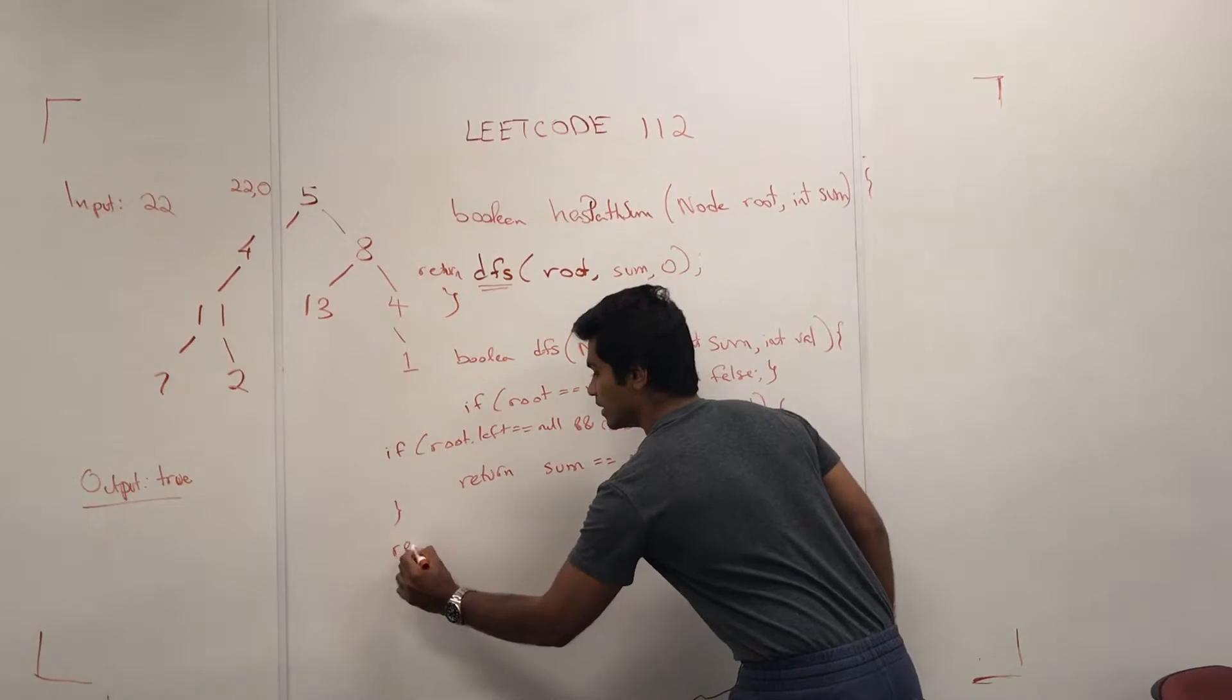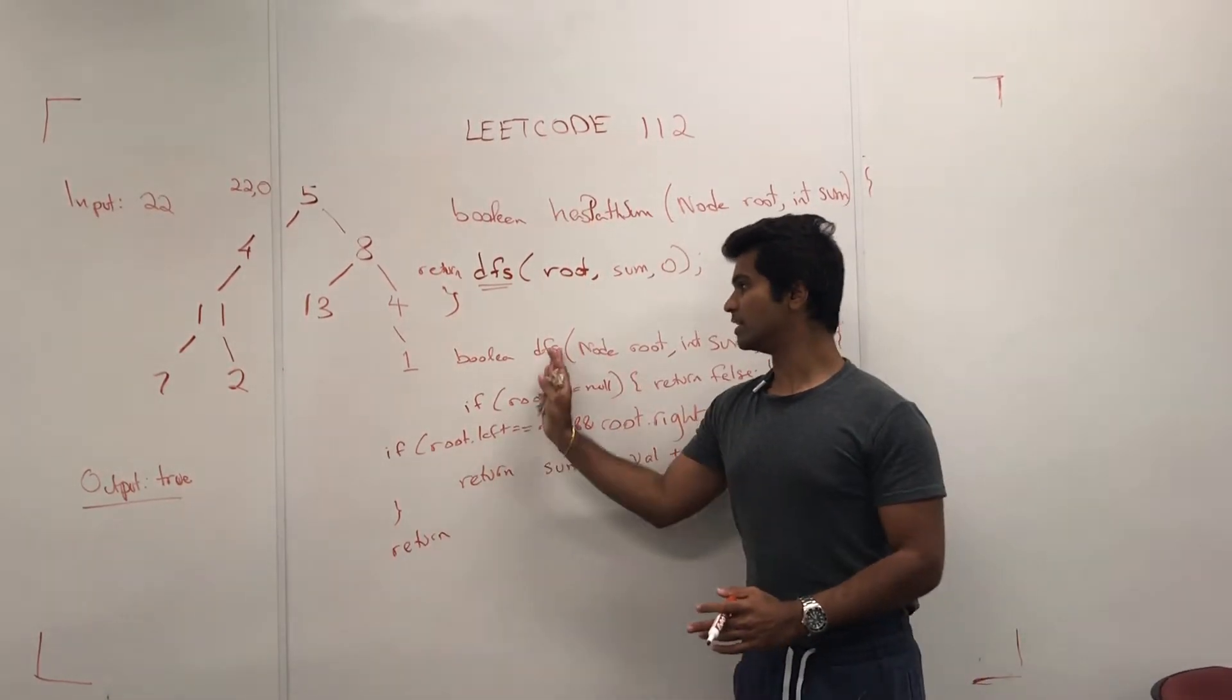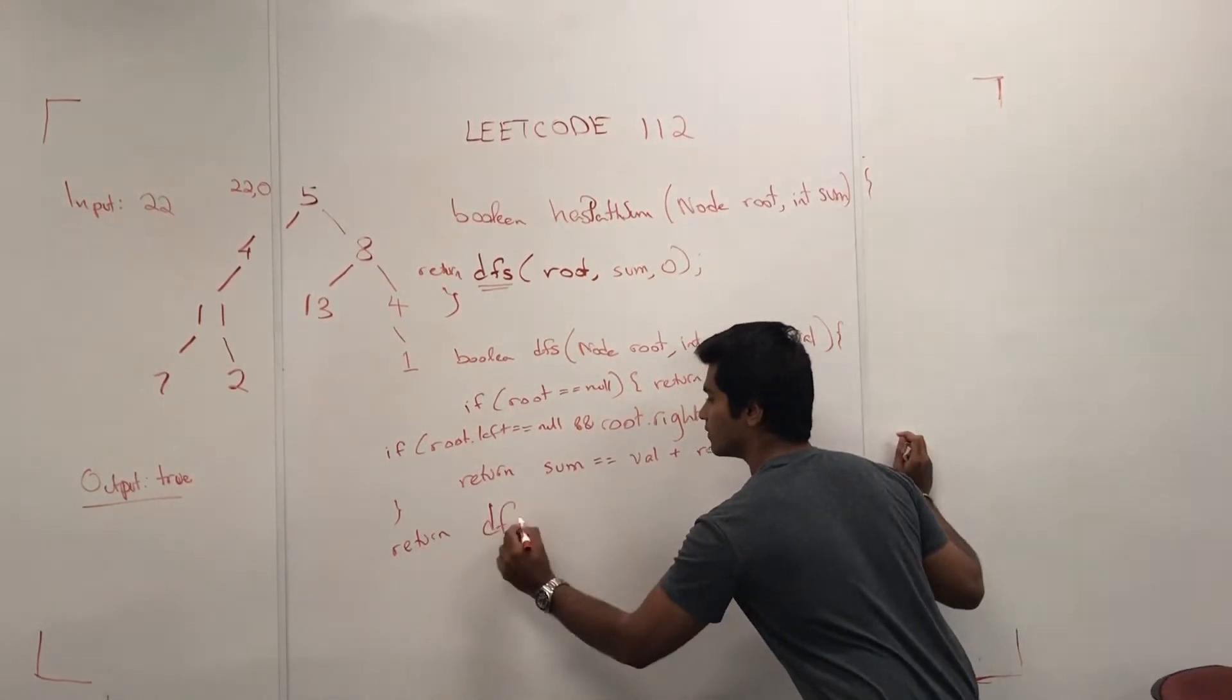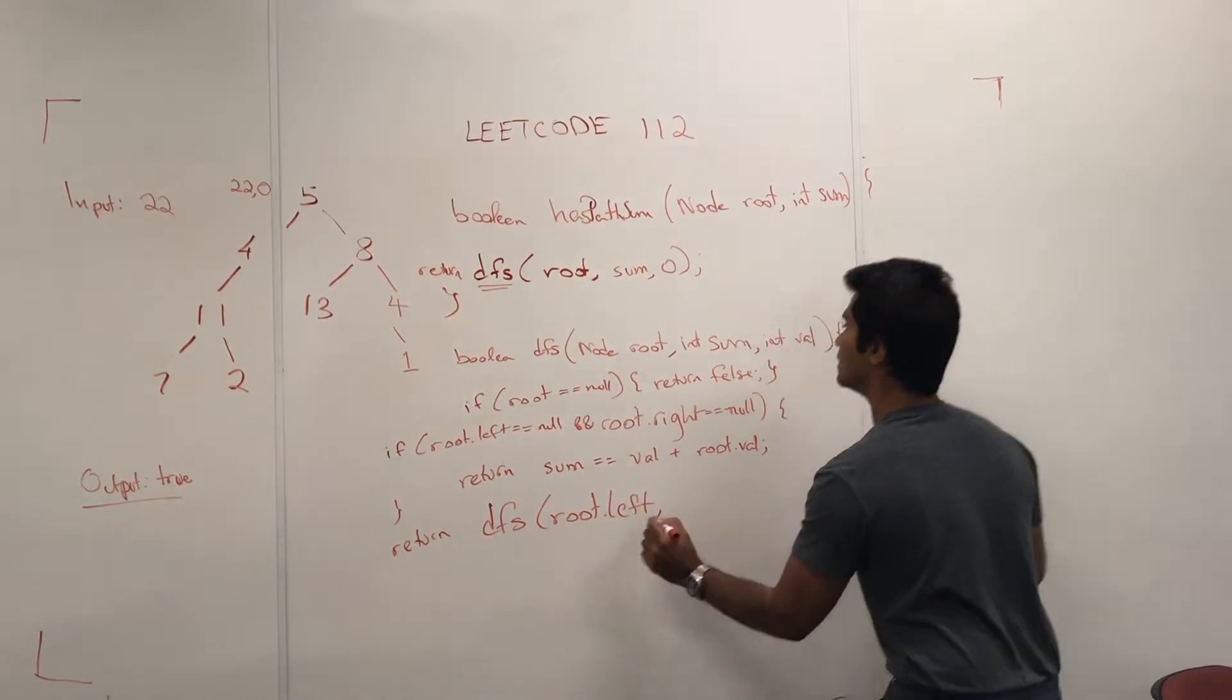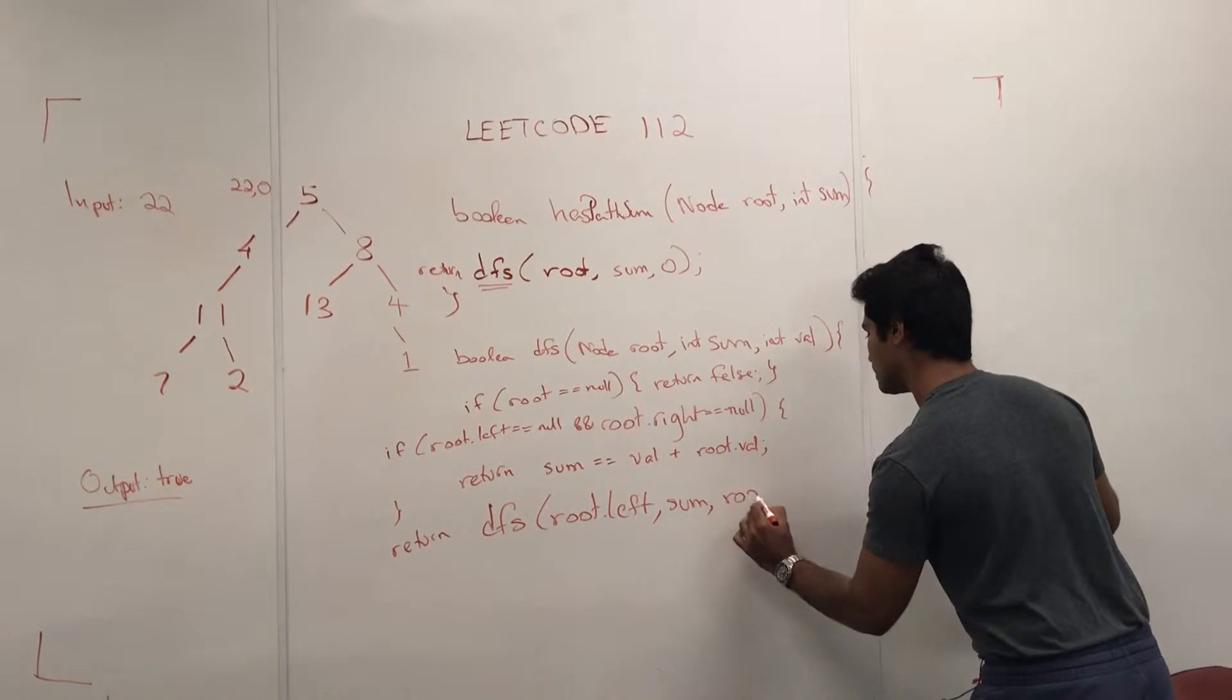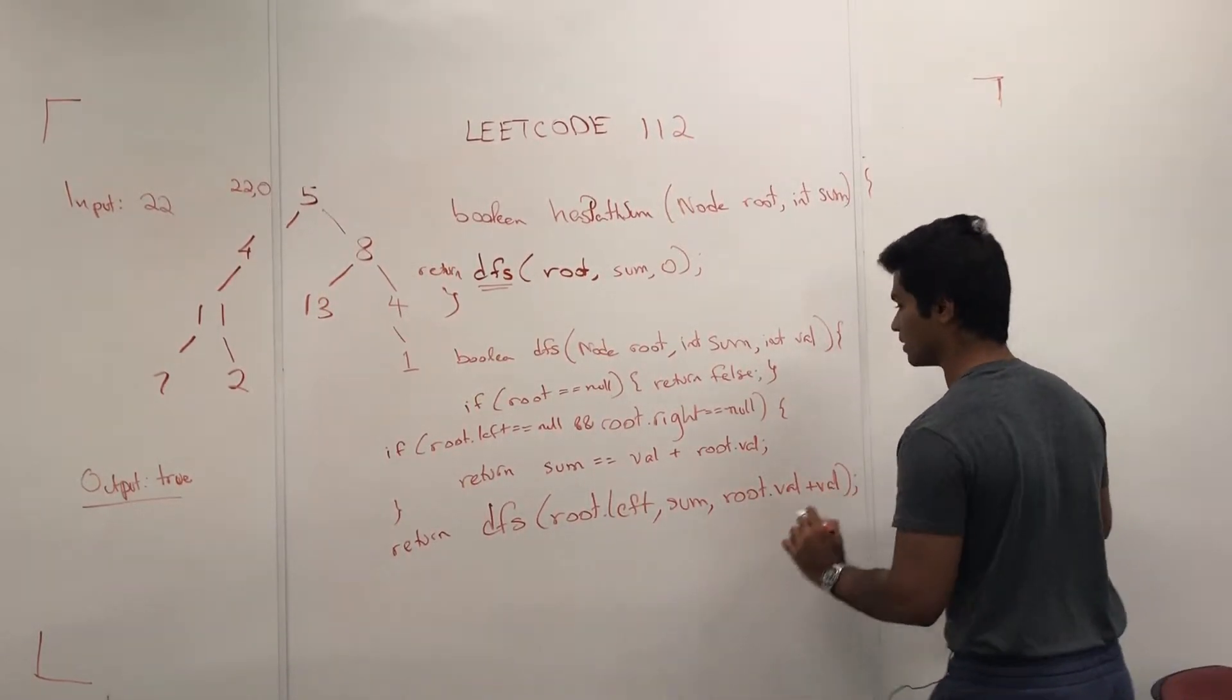The next thing we have to do is return the DFS called on the left node and the right node. So that's going to look like DFS root.left, sum, and root.val plus the val that has been temporarily passed in.